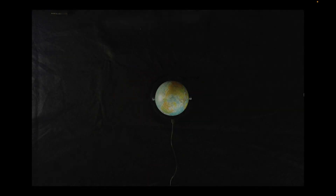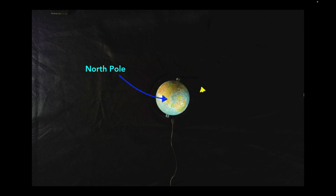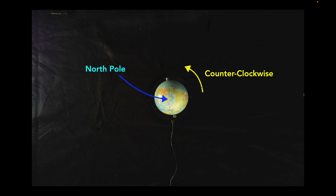We're going to start with a view of the Earth above the North Pole. When we do this, the Earth rotates in a counterclockwise direction. It's also helpful that when we zoom out and see the Moon, the Moon will also orbit in the same direction that the Earth rotates. So they'll both move counterclockwise — not at the same pace, but both will move in the same direction.